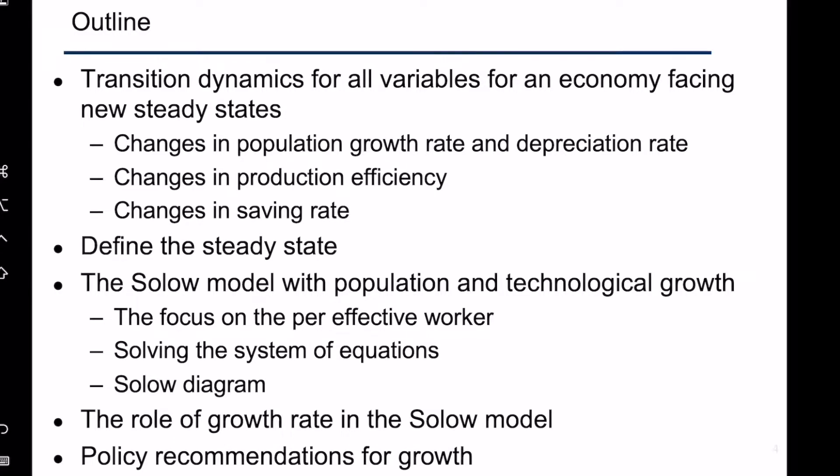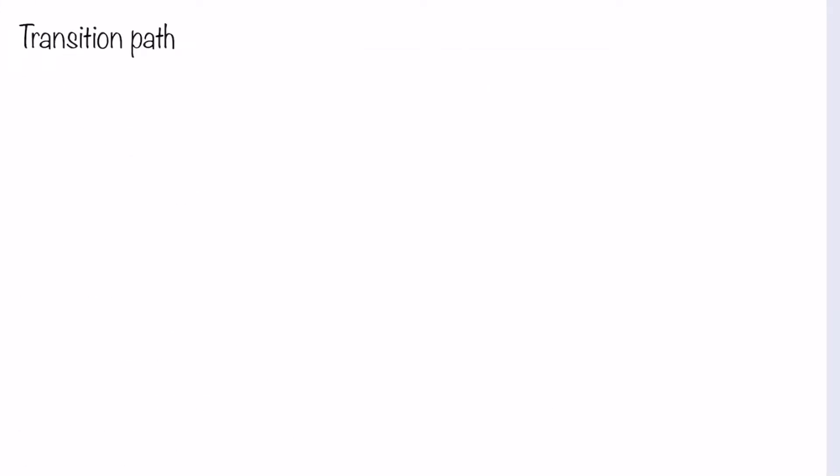So now let's begin with today's lecture. Let's continue the discussion related to the transition path. Before we begin, we want to review that when looking at the transition path, the first question we need to ask is: does the steady state change? If the steady state changed, then the economy will transit from one steady state to another. But if the steady state doesn't change, then the economy will go back to the original state after the shock.